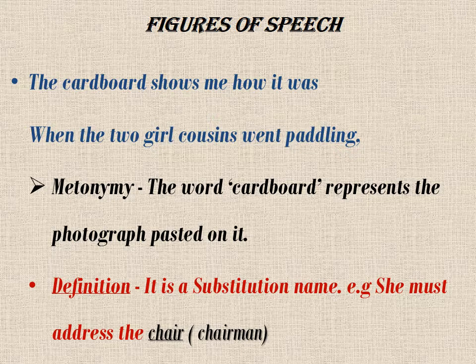For example: 'She must address the chair.' Here 'chair' doesn't mean the wooden chair — it means the chairman, the designated person being addressed. So the substitution name 'chair' is used for 'chairman.' Whenever we find such a substitution of name, we call it metonymy.